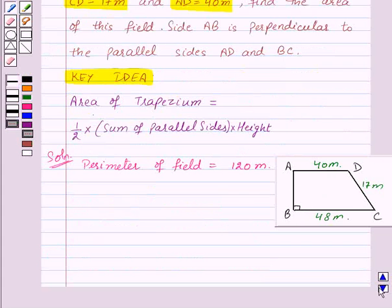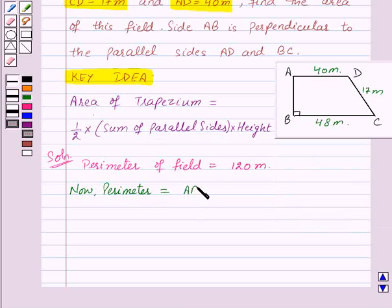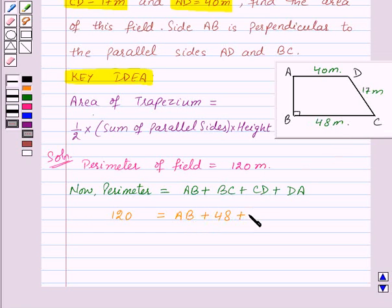Perimeter equals AB plus BC plus CD plus DA. Now let us substitute the values. Perimeter is 120 meters. AB we need to find, so we write AB as it is. BC is 48 meters, CD is 17, and DA is 40 meters. This implies 120 equals AB plus 105.